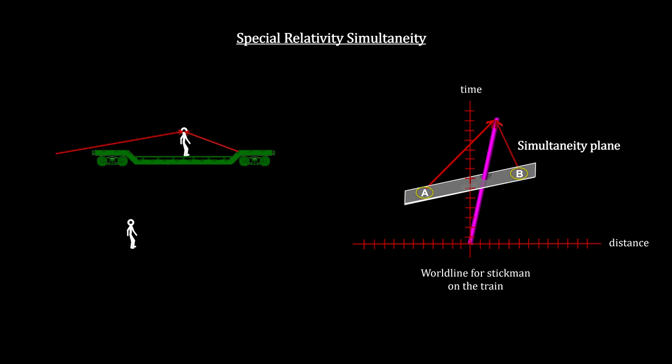So we see that the simultaneity plane for the moving person is necessarily tilted up on the right.